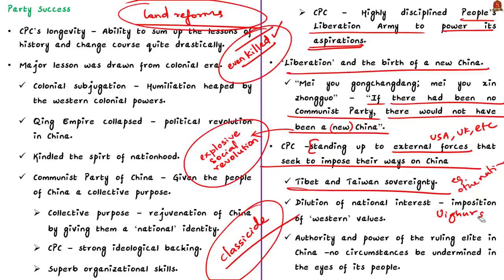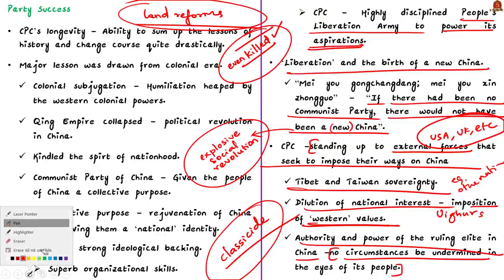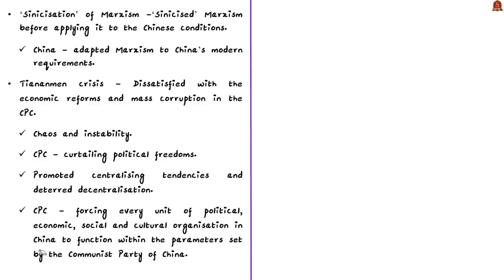The party sees such criticism as a dilution of national interest which will lead to the imposition of Western values. It pushes for strong responses to any perceived attack on China's sovereignty, asserting that the authority and power of the ruling elite in China can under no circumstances be undermined in the eyes of its people. This is another reason that has made the party survive for a long period.